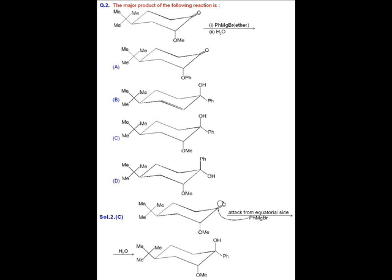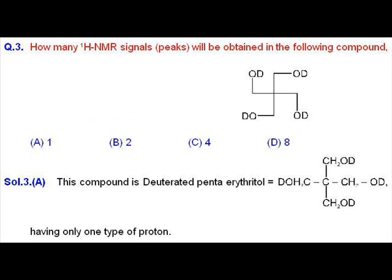its attack will take place from the side from which we can get a more stable product. So attack takes place from equatorial side and the product formed is given in option C, where OME group is in axial position and PH group is in equatorial position and this should be the major product.